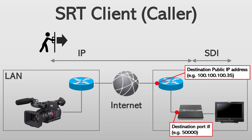In the case of client mode, the camera pushes SRT streaming to the receiver, so the camera needs to know the IP address and port number of the receiver. As you can see in the diagram, in this video I set up the camera to push the SRT streaming to the receiver via the Internet. The IP address 100.100.100.35 and the port number 50,000 are examples.